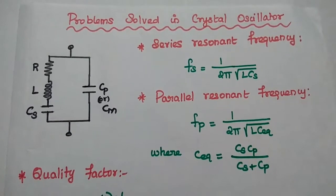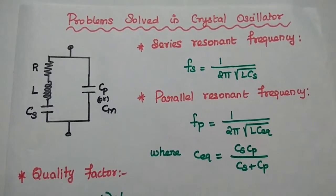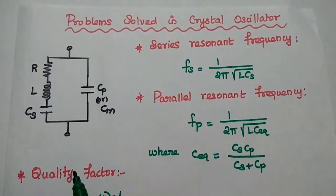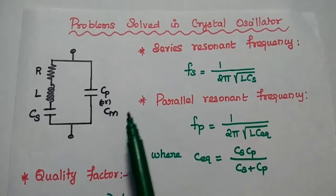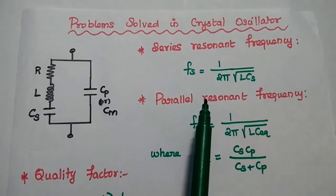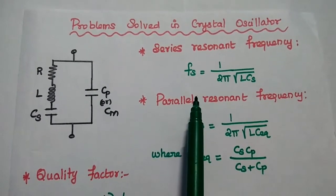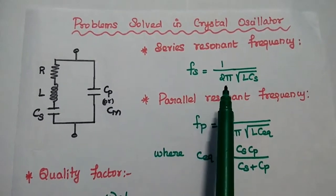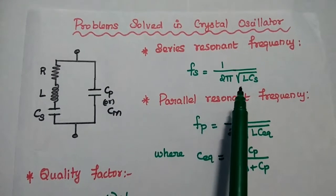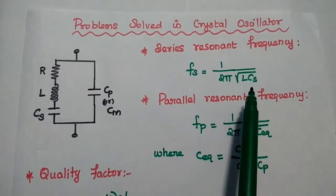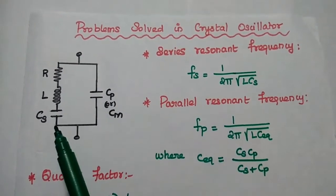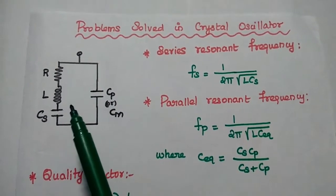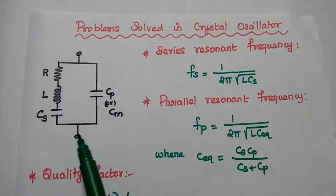Dear students, now we are going to solve problems in crystal oscillator. The important formulas are: series resonant frequency Fs is equal to 1 by 2 pi square root of L into Cs, where Cs is the series capacitance in the equivalent circuit.